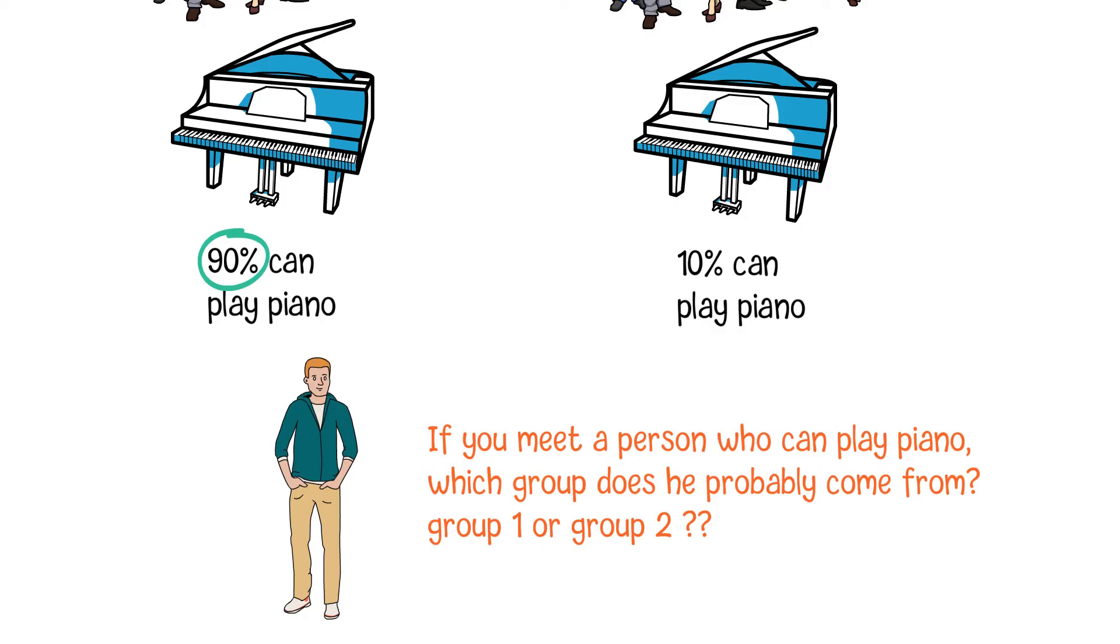However, if we take the base rate into consideration, the result might be totally different. Group 1 has a total of 9 people who can play piano. In comparison, Group 2 has 100 people who can play piano. The probability that the person from Group 1 is only 8.2%.